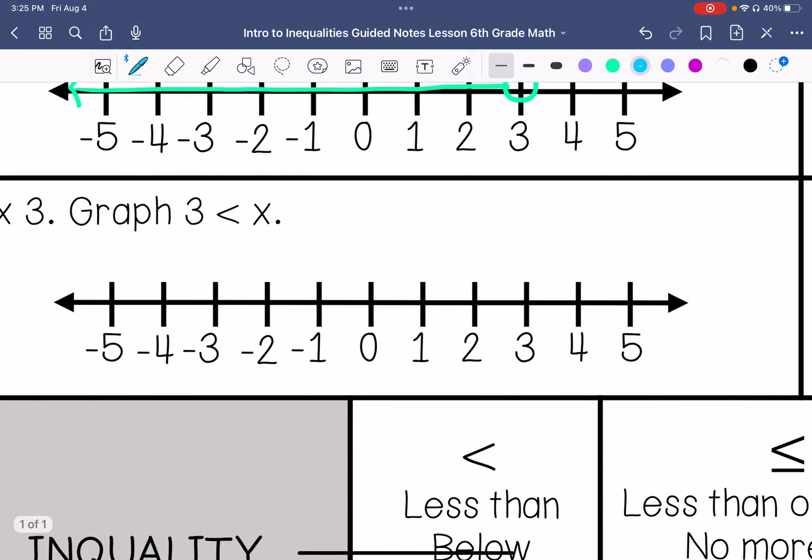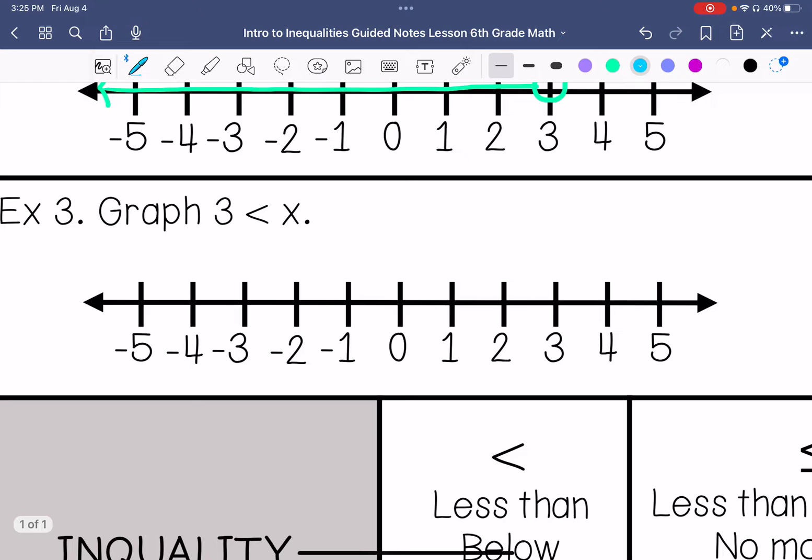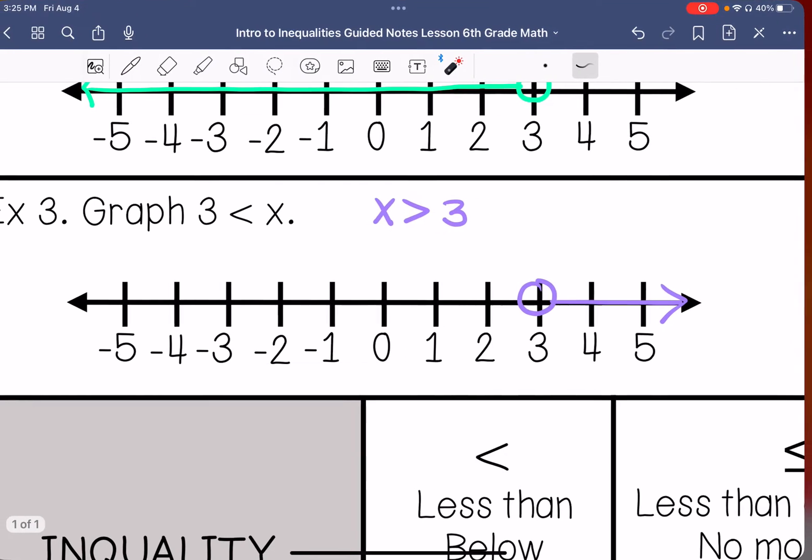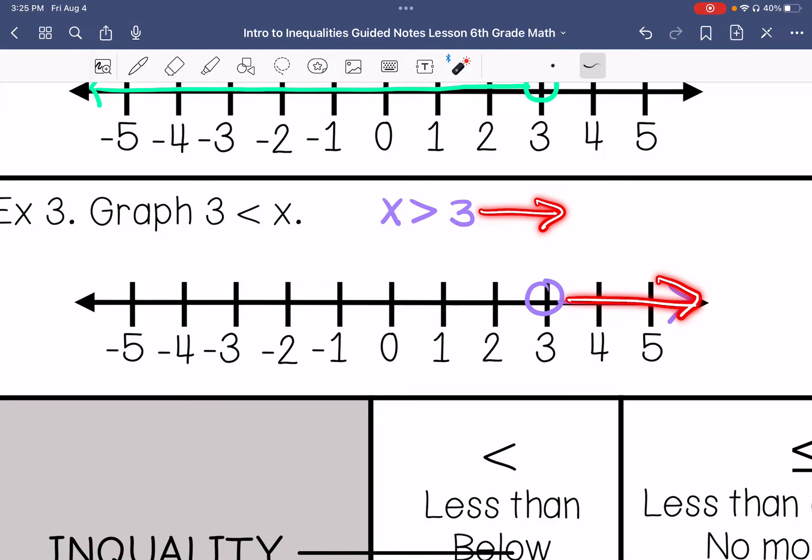Example number three. I'm going to rewrite this as x is greater than 3. I'm just putting the x on the left side, making sure that the open part is still towards x. So this is going to be an open circle, and it's going to be anything greater than 3, so I'm going to go this direction. Notice that the pointy part of the inequality is pointing this way, and my graph is also pointing that way. And this only applies if x is on the left side.